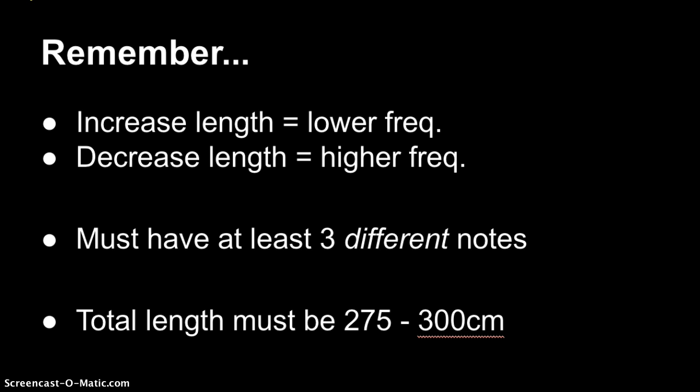So a couple things to remember. One is just if you increase the length, you're going to lower the frequency. If you decrease the length, you'll increase the frequency. You must have at least three different notes in your chime, so you can have more than that. And it could sound really good to have a couple of different notes at different octaves of the same note or whatever. But you do have to have at least three different notes. And the total length of your chimes must be 275 to 300 centimeters. So after you do these calculations and you figure out the relative lengths that you need, you'll need to add them up. And if they don't fall within the range that you need, then you'll have to either scale them all down or scale them all up in order to make it so that you're at 275 to 300. But we'll get to that if you run into that issue.